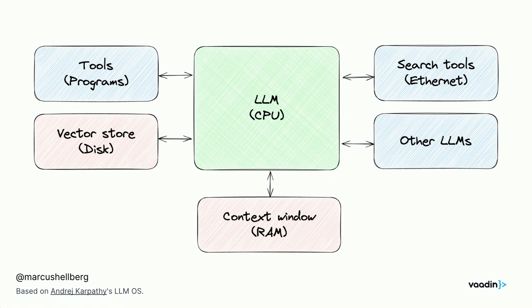In and of itself you don't do a whole lot with just a CPU if you don't have anything to give it. At a minimum we want some sort of working memory — in our case that's a context window. If we want to do something specific, we'll also want persistent storage, tools to defer tasks to the AI, and the ability to call other LLMs, since different models are trained on different tasks.